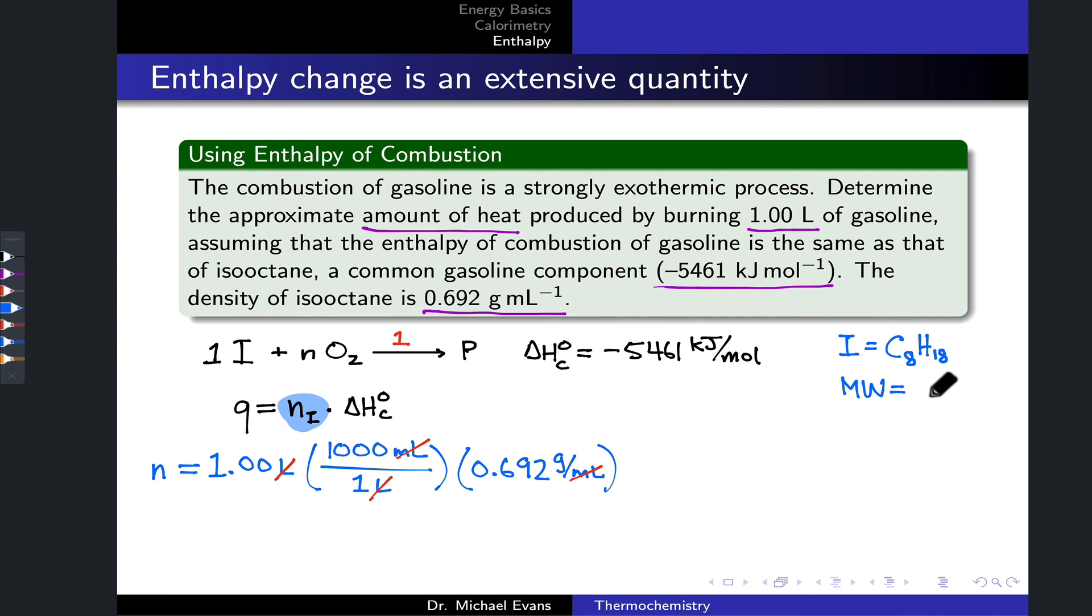You can calculate using the periodic table and average atomic masses. It's 114 grams per mole. Now we have a conversion factor from mass to moles. We know that in one mole of isooctane there are 114 grams of material. This is going to allow us to calculate the moles of isooctane we're dealing with.